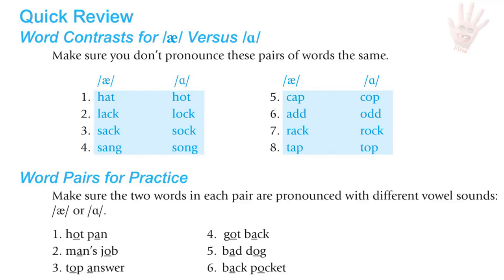Word combinations for A and Ah: hot pan, man's job, top answer, got back, bad dog, back pocket.